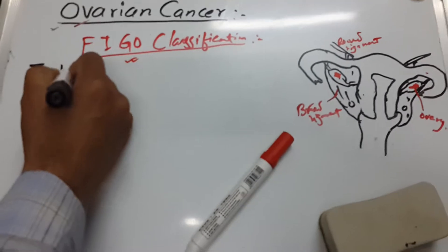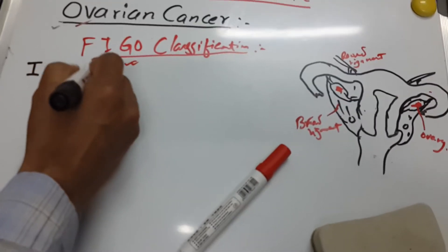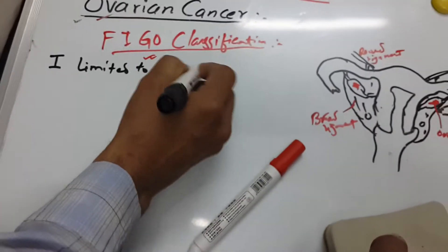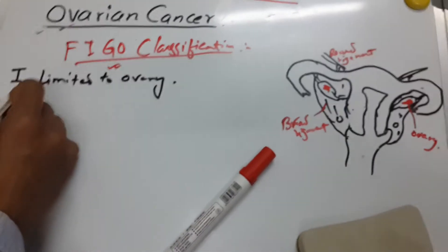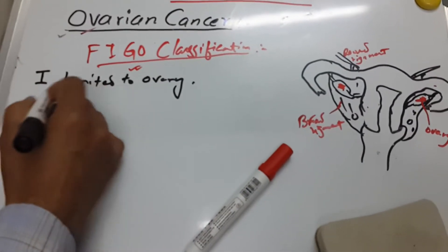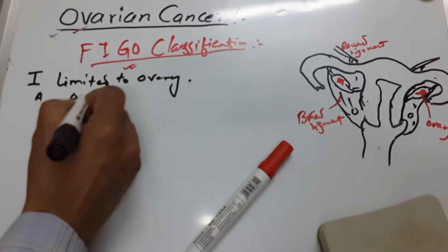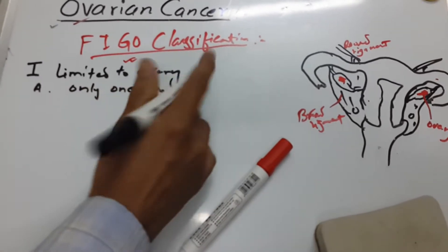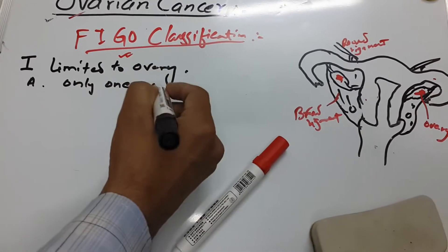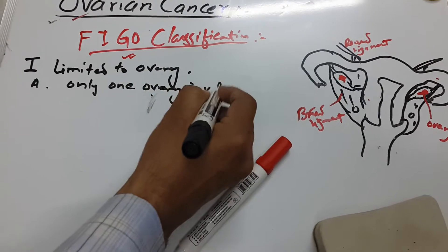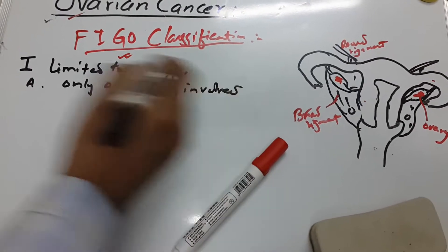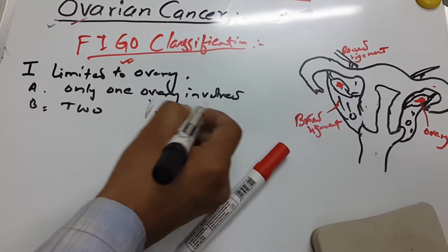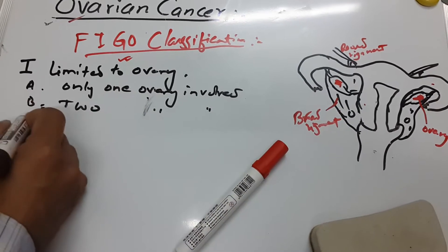The first stage is limited to the ovary. Stage IA is only one ovary involved, and Stage IB is two ovaries involved.